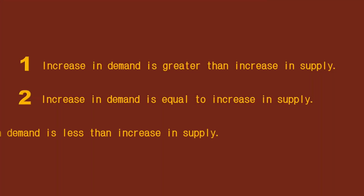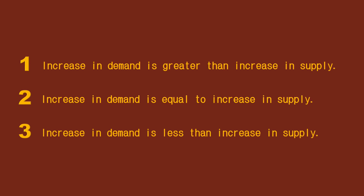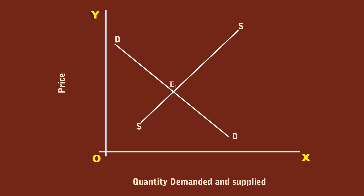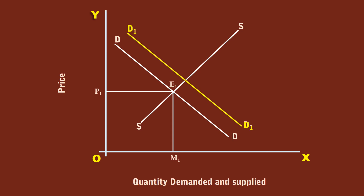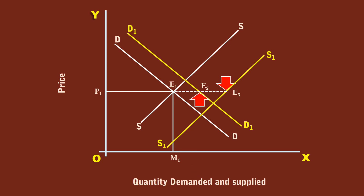Case 3: Increase in demand is less than increase in supply. To begin with, the market is in equilibrium at E1, where demand curve DD cuts the supply curve SS. The price is P1 and the quantity is M1. The demand increases and the demand curve shifts to the right; the new demand curve is D1D1. The supply also increases and the supply curve shifts to the right; the new supply curve is S1S1. The magnitude of increase in demand is less than the increase in supply. The immediate effect is there arises an excess supply condition to the tune of E2 to E3. The sellers are willing to supply E3 units at price P1, but consumers want to buy E2 units at the same price.